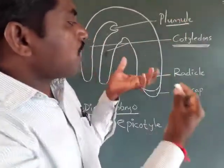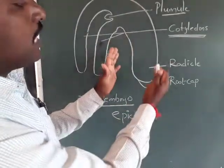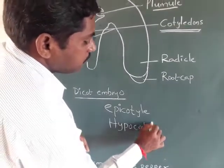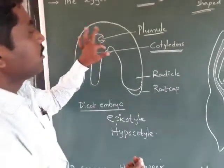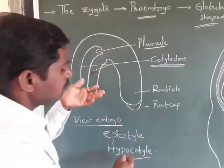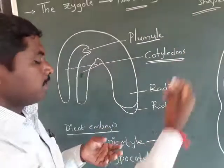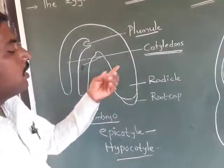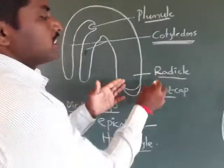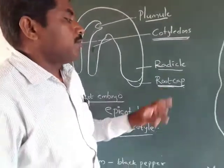The portion of the embryonal axis below the cotyledon is called the hypocotyl. The hypocotyl terminates with the radicle and root cap. The radicle and root tip are enclosed by the root cap.